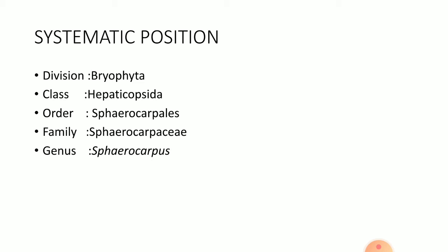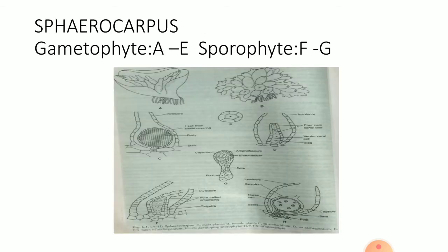Now we come to the order Sphaerocarpales, where we will be studying the genus Sphaerocarpos. The genus Sphaerocarpos is not found in India. Habitat-wise, the plants prefer very moist and cold places for their luxuriant growth. The morphological characters vary according to the habitat.